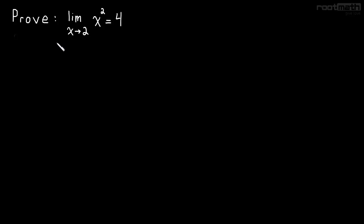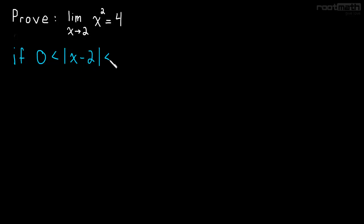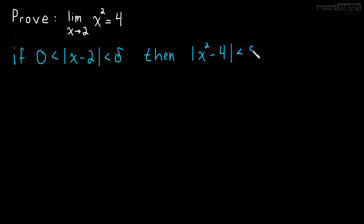What do we need to do to prove this? We need to show that given any epsilon greater than zero, there exists a delta greater than zero, such that if zero is less than the absolute value of x minus two is less than delta, then the absolute value of x squared minus four is less than epsilon.